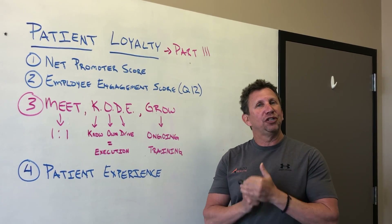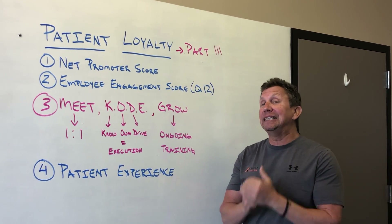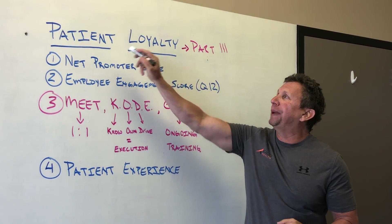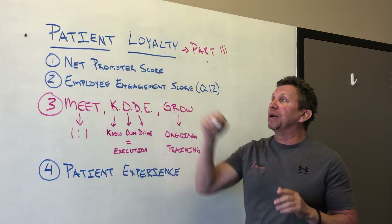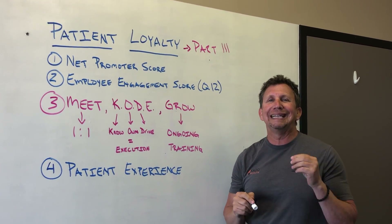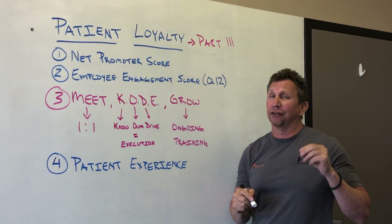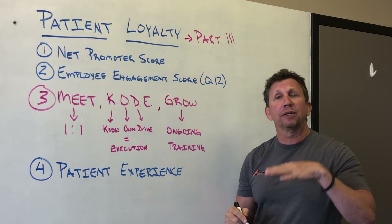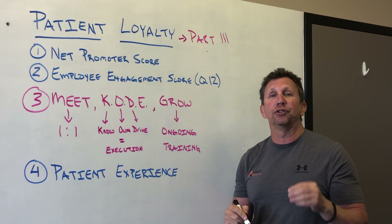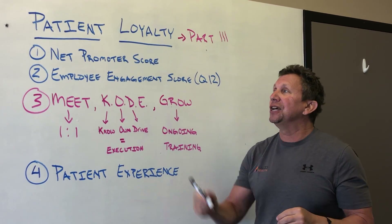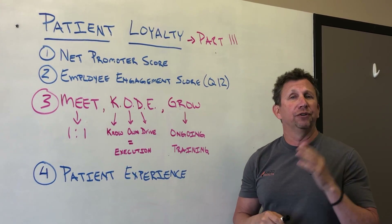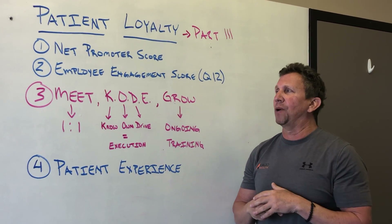Hey everybody, this is Dr. Jay Greenstein coming to you live from Washington DC, and we are continuing our very important conversation on patient loyalty. This is part three. The first video covered the net promoter score, really identifying patient loyalty — the difference between patient satisfaction, people who are satisfied but may not return, and patient loyalty, those loyal patients who are your raving fans. You find out your patient loyalty score by utilizing the net promoter score. If you don't remember what that is, go back and watch that video.